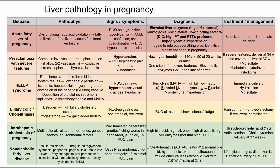Next, these last three are lower acuity issues. We have biliary colic and cholelithiasis. This is not a disease specific to pregnancy, but pregnancy can exacerbate these conditions. Pregnancy is a high estrogen state, and estrogen increases biliary cholesterol excretion, which can form stones. Progesterone is also high in pregnancy, which decreases gallbladder motility. Signs and symptoms are right upper quadrant or epigastric pain, which can be postprandial with fatty foods — someone eats a cheeseburger and has pain right afterwards. Pain can be recurrent.